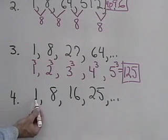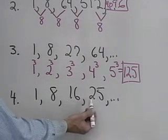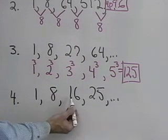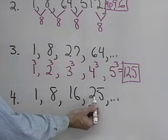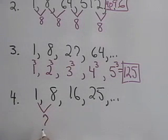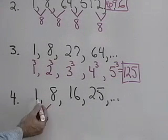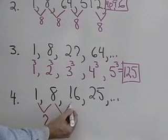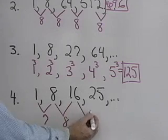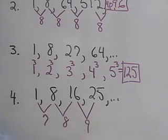This sequence here starts with 1, then 8, then 16, then 25. It looks like maybe I could add 8, but when I add 8 to 16, I don't get 25. Let's look at addition again. 1 plus 7 is 8, 8 plus 8 is 16, 16 plus 9 gives me 25.